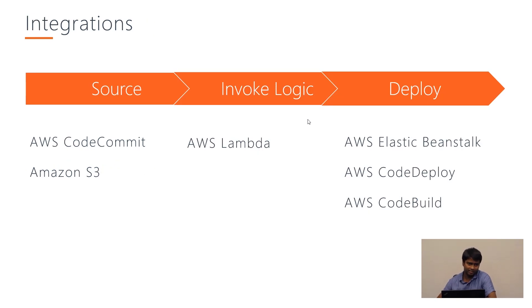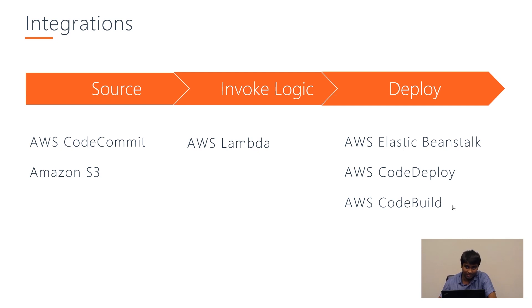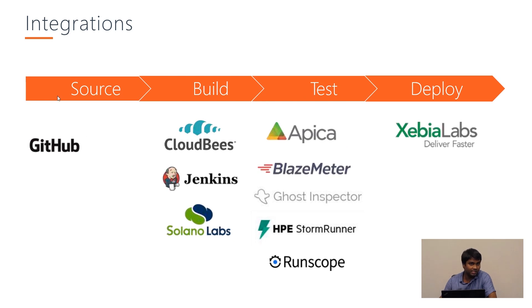Integrations with AWS CodePipeline include AWS CodeCommit and AWS S3 — we can even get the source file from S3. We can invoke logic between stages using AWS Lambda, and do deployments using AWS Elastic Beanstalk, AWS CodeDeploy, and AWS CodeBuild. Note that AWS CodeBuild is not specifically meant for deploying, but in certain cases such as serverless deployments, we can use it. Third-party integrations include GitHub for source; CloudBees, Jenkins, and Solano Labs for build; BlazeMeter and Ghost Inspector for testing; and XL Deploy for deploy.